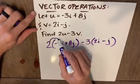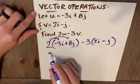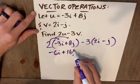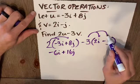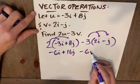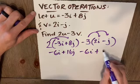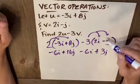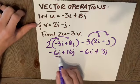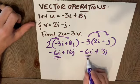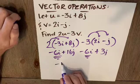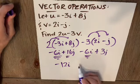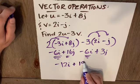Now look what happens here. This is distribution. -6i + 16j. Careful, you've got a negative there. Minus 6i plus 3j. You've got to be careful. Negative times positive is negative, but negative times negative is positive. Now to find my resultant vector, I'm going to add my i's: -12i. And I'm going to add my j's: 16 plus 3 is 19j.